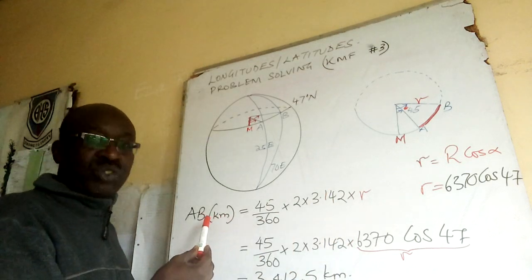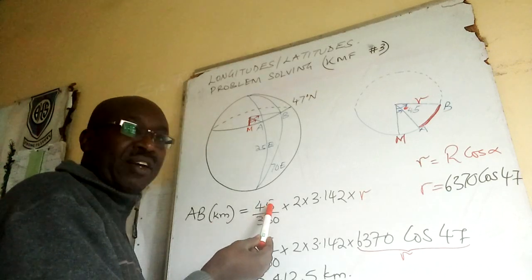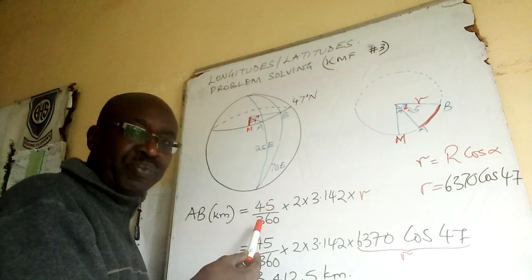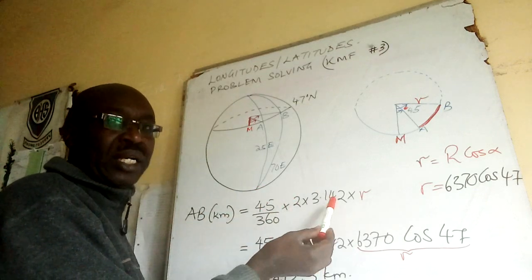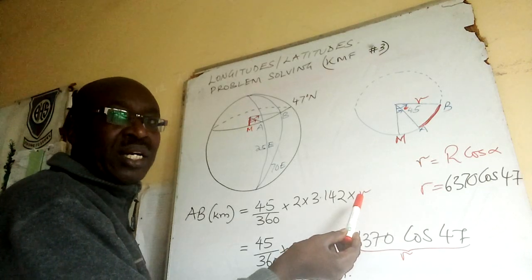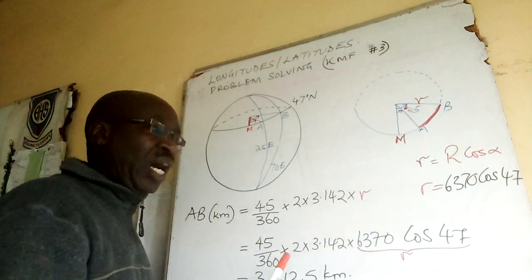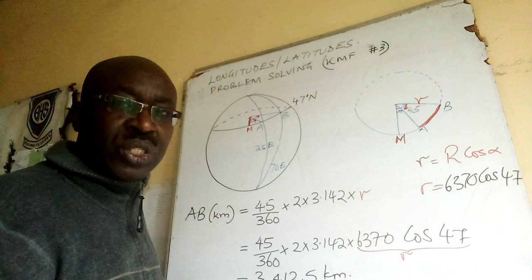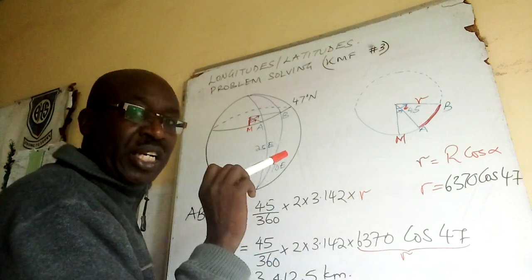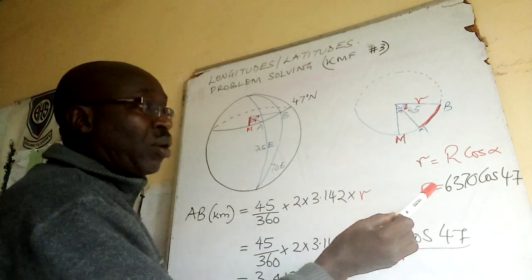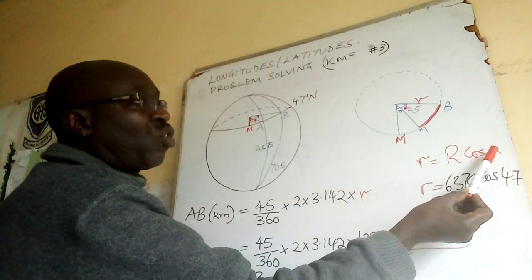I want us to get AB in kilometers. AB in kilometers will be 45 over 360, the angle subtended at the center over 360, times 2 pi small r. Small r means the radius of the latitude. I've put it in red because small r is related to big R in the relation r equals capital R cos alpha.